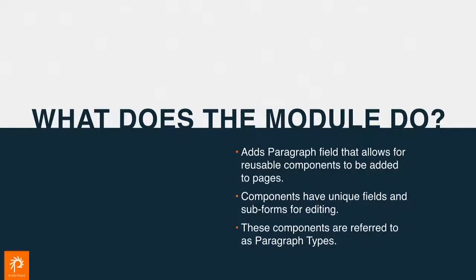So what does the module do? You get a field that you can add to any other entity type, like a block or a node. You get subforms, so you can add multiple - just like if you're adding an image, you add a paragraph type. You can add as many of those and as many different types as you want. These different components are referred to as types, similar to content types or block types.